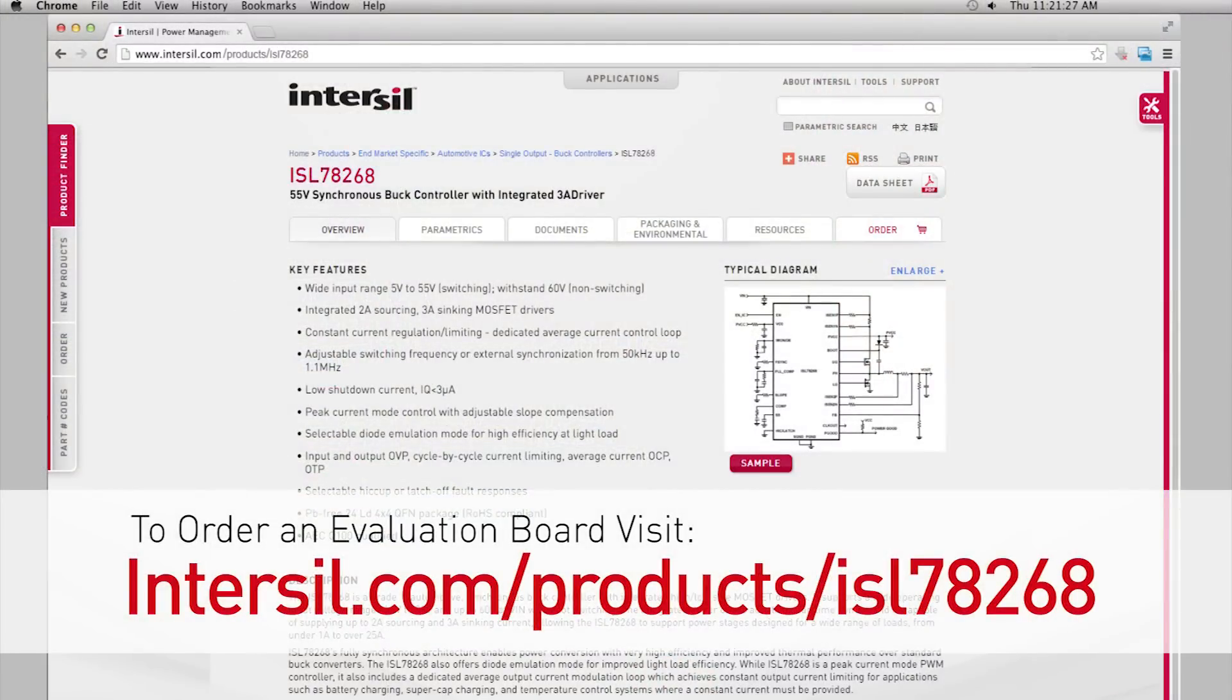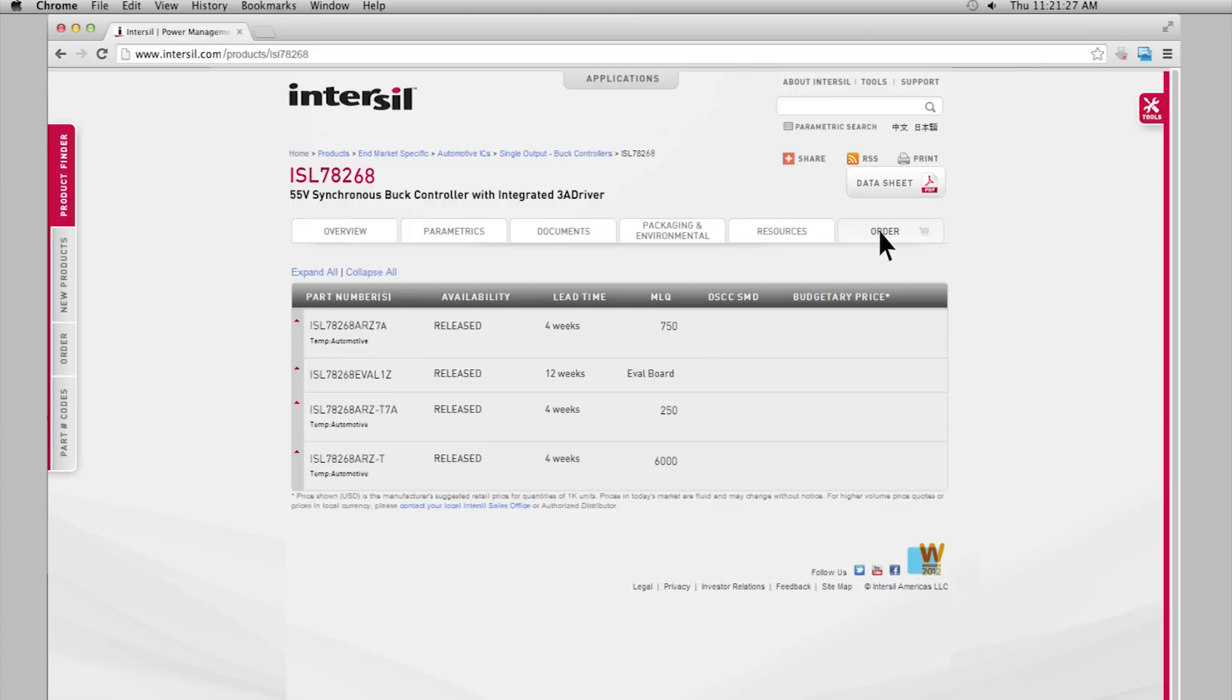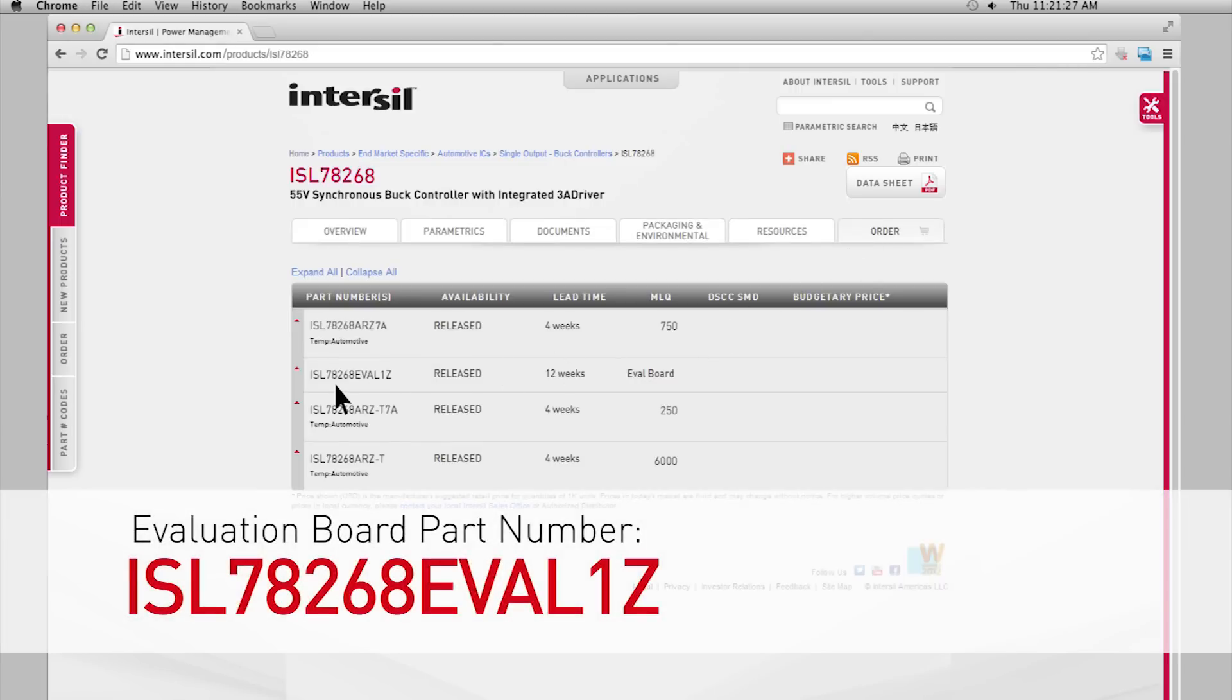The ISL78268 evaluation board is a great way to try out any of these features. It's easy to order and to use. To get one, you just need to visit the 78268's page on InterSIL.com. Just click over to the order tab and then scroll down to find the evaluation board's part number. That's ISL78268Eval1C.